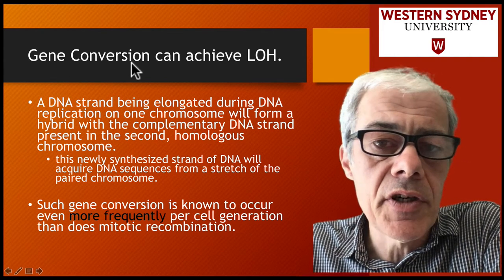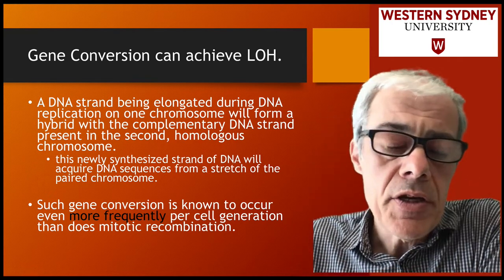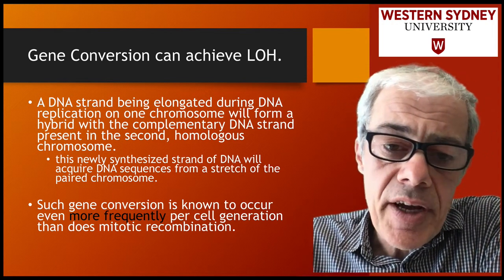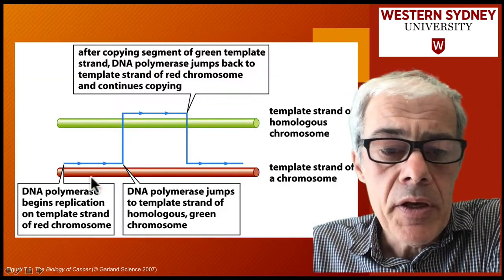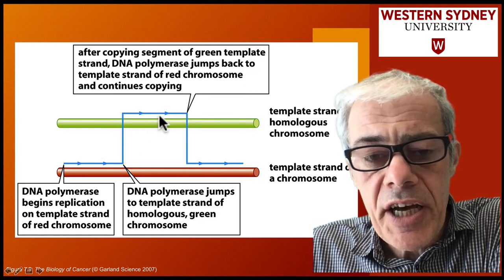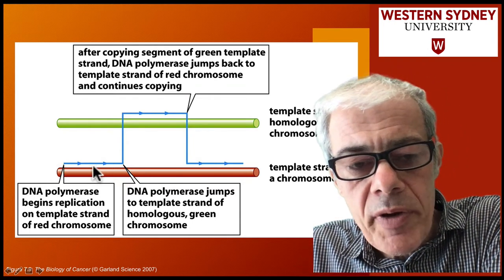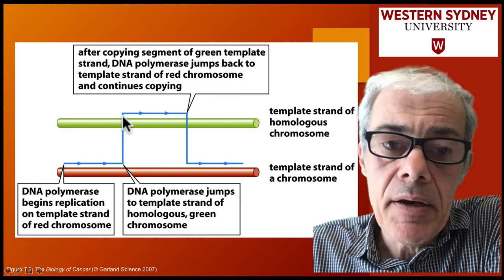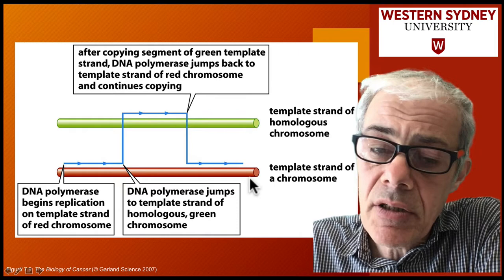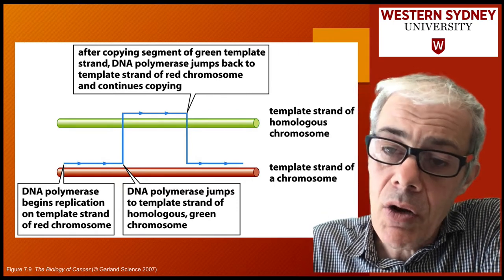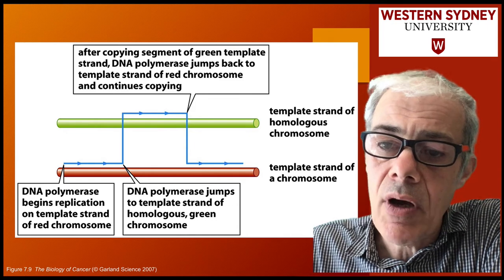With gene conversion, during DNA replication, you get the DNA polymerase jumping strands between the two copies of the two different alleles. You have two alleles — one has a mutation and one doesn't, so it's heterozygous. The DNA polymerase copies one of these, then jumps to the other allele, and then jumps back. When you get segregation of the chromosomes, again you get loss of heterozygosity, and one of the outcomes is a cell that's got two copies of the mutation.